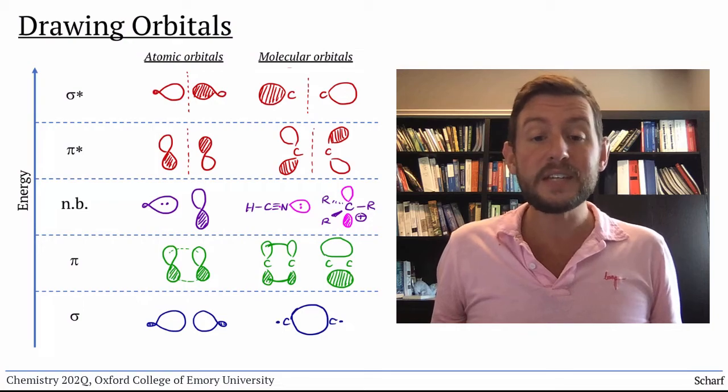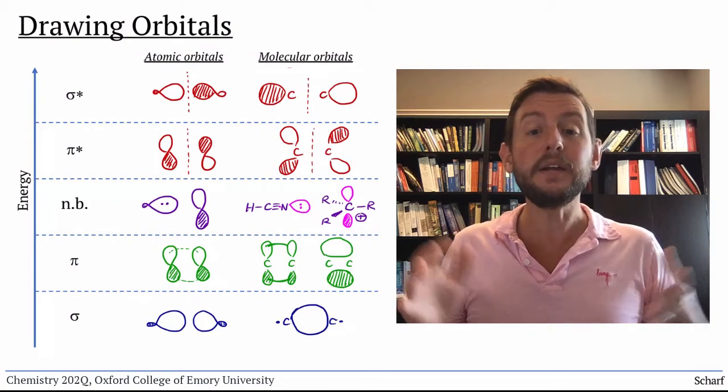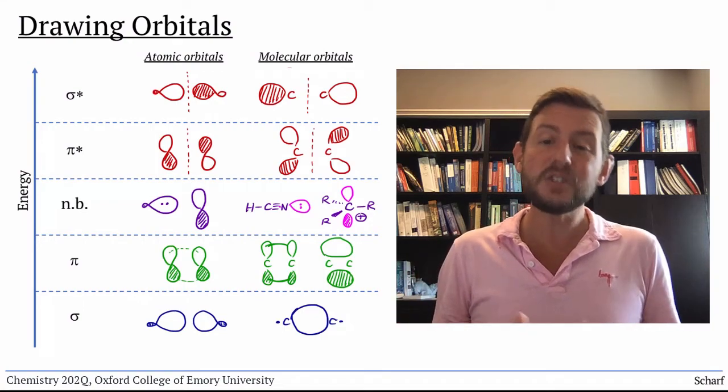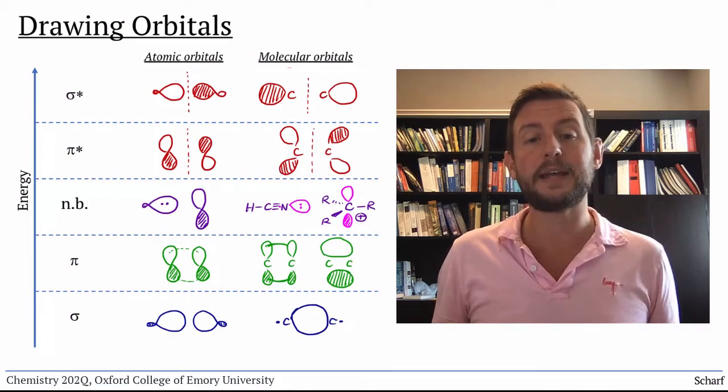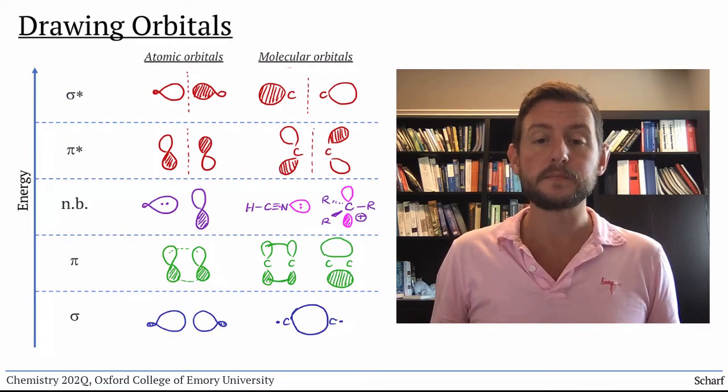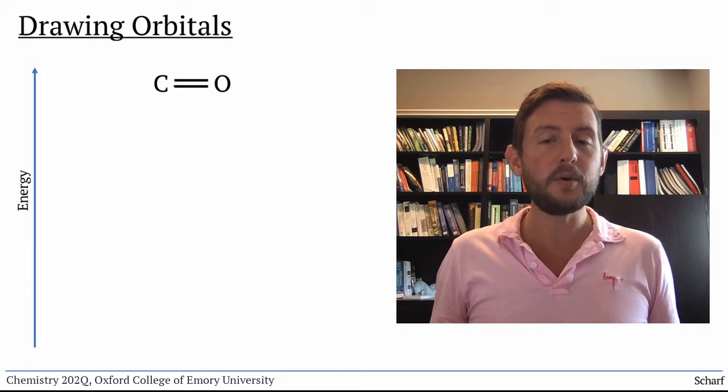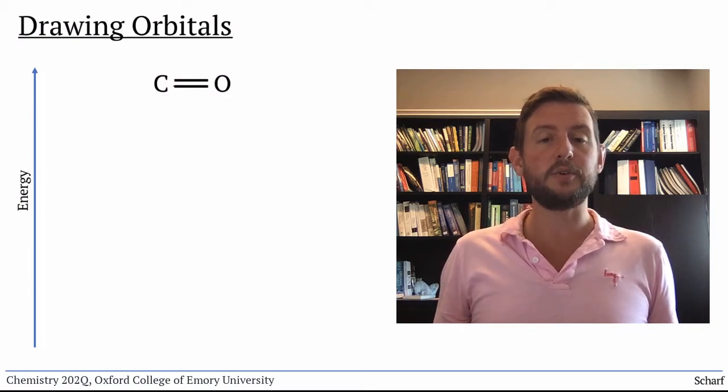Whether they are sigma or pi, the appearance of molecular orbitals changes slightly when two different atoms are bonded to each other. Let's examine the MO diagram of a carbonyl group to illustrate this.